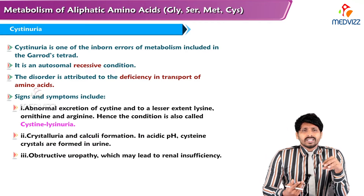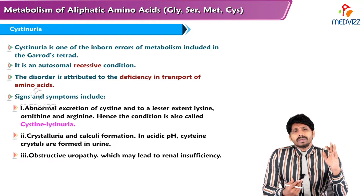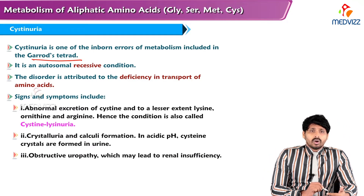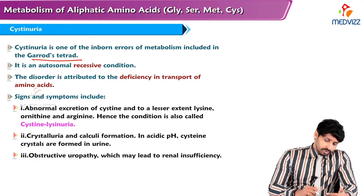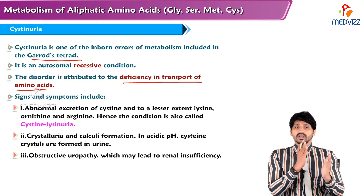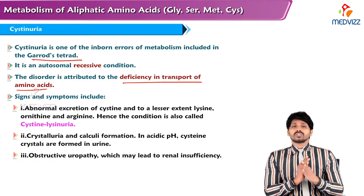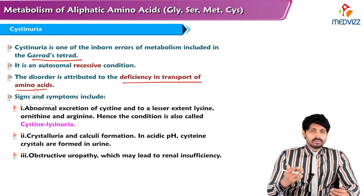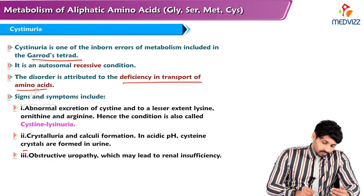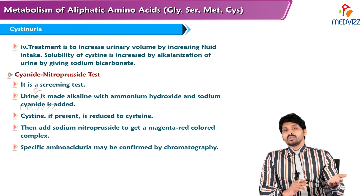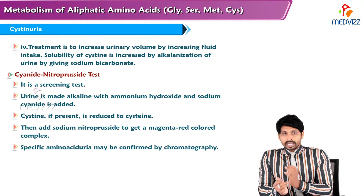Cystinuria: when there is a defect in transport of amino acids in renal tubules, cysteine is excreted in the urine causing cystinuria. It is an inborn error of metabolism and part of Garrod's tetrad — an autosomal recessive condition due to deficiency of amino acid transport. Signs and symptoms include abnormal excretion of cysteine and, to a lesser extent, lysine, ornithine, and arginine — four amino acids are excreted.